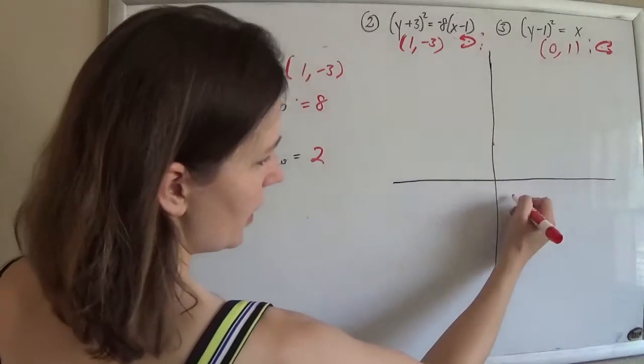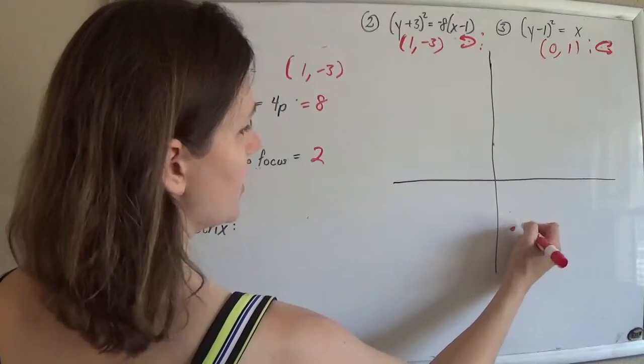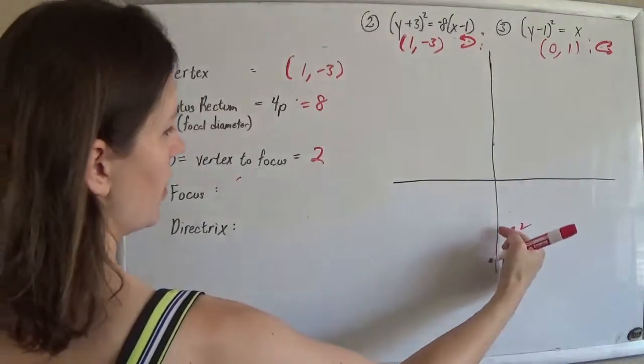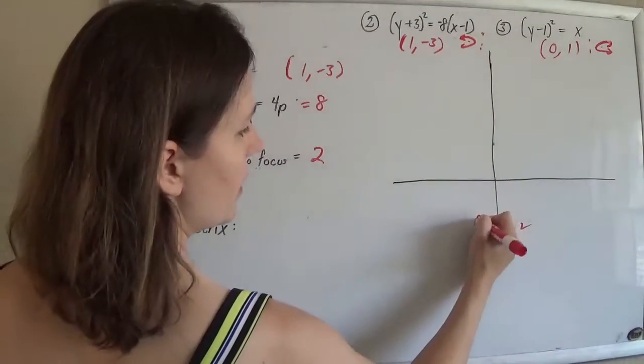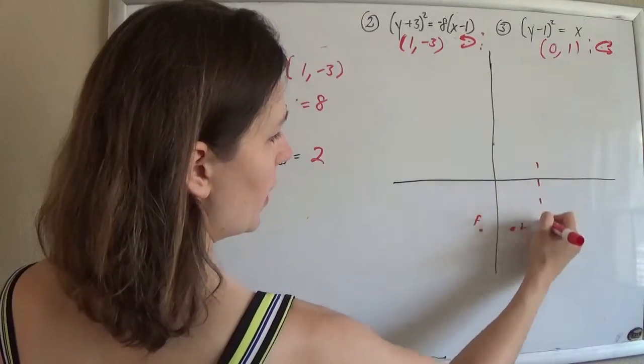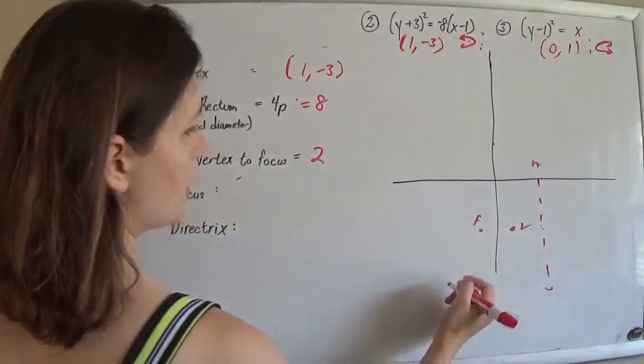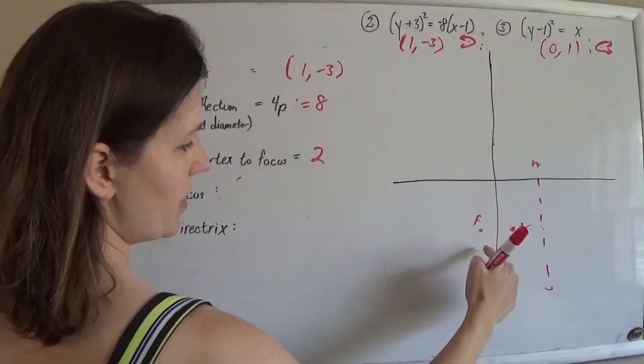So 1, negative 1, 2, 3 is the vertex. Going this way, so I'll go 1, 2, that's p, that way to get my focus, go 2 the other way to get my directrix. Focal diameter is 8, so 4 on either side.